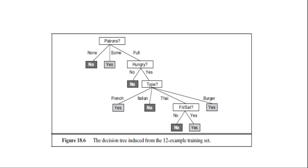We note there is a danger of over-interpreting the tree that the algorithm selects. When there are several variables of similar importance, the choice between them is somewhat arbitrary. With slightly different input examples, a different variable would be chosen to split on first and the whole tree would look completely different. The function computed by the tree would still be similar, but the structure of the tree can vary widely.